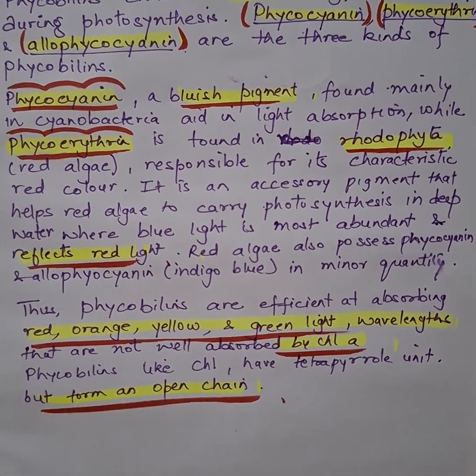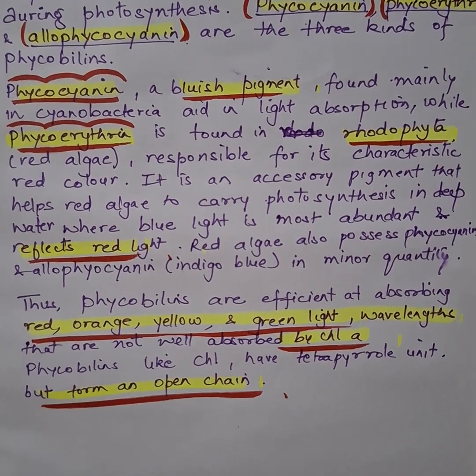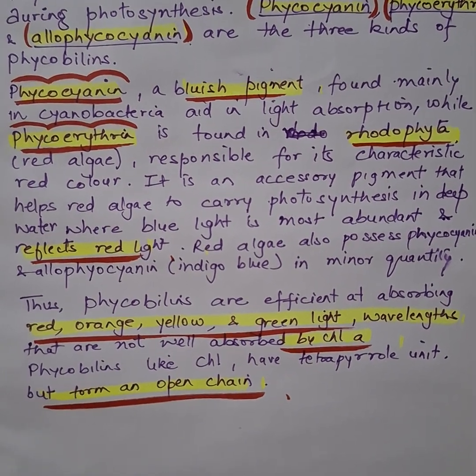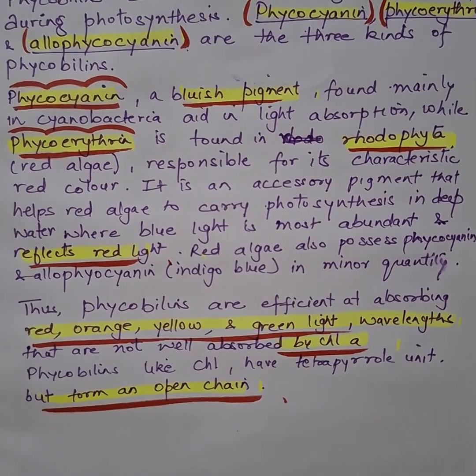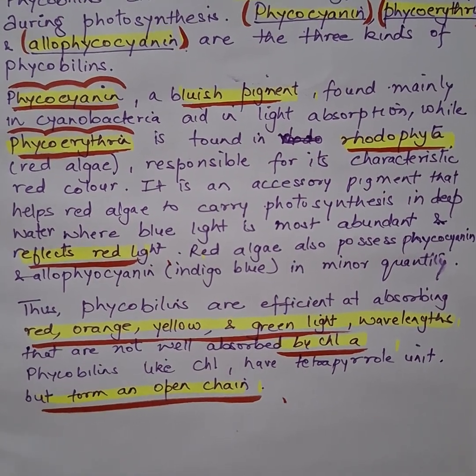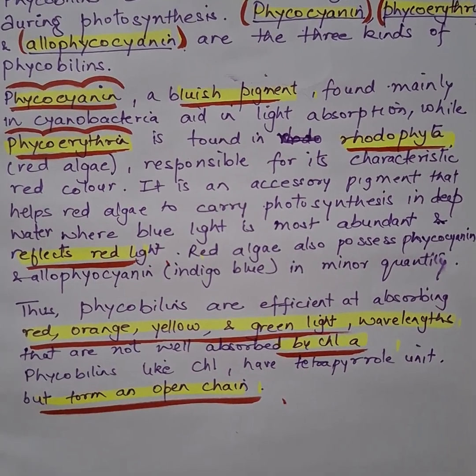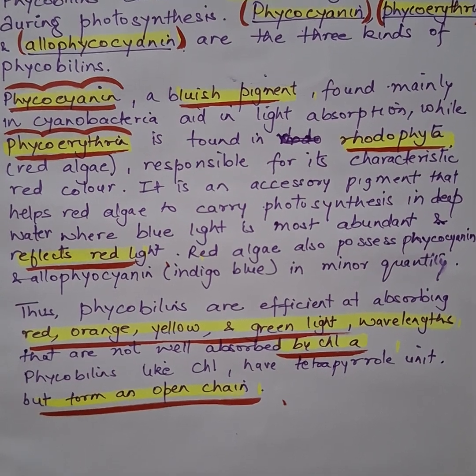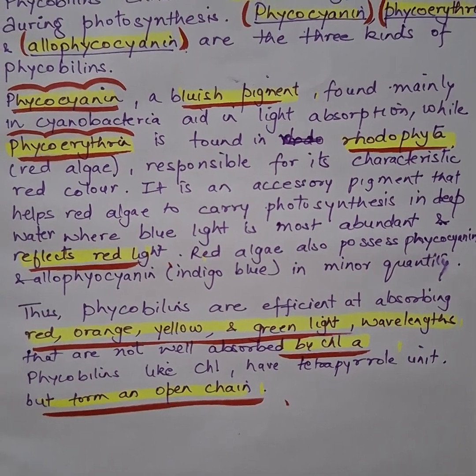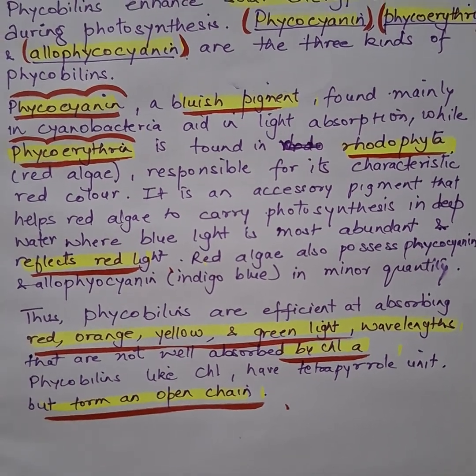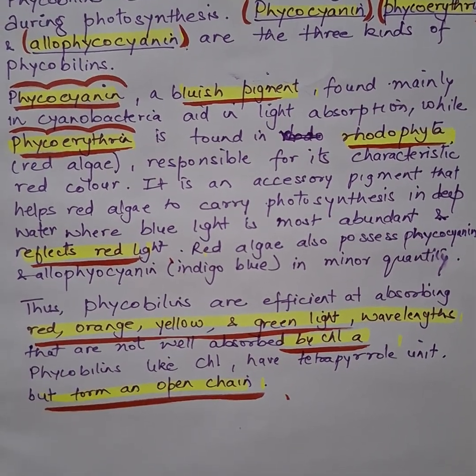Allophycocyanin is indigo-blue in color. Thus, phycobillins are efficient at absorbing red, orange, yellow, and green light wavelengths, which are not well absorbed by chlorophyll a.